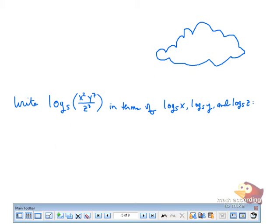We're going to start with log base 5 of x squared y to the 7th over z cubed. So basically this says break it down as far as it will go, and we're going to use all three of our rules here.